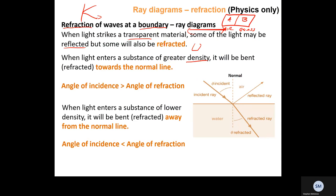Density is the idea of more particles in a particular amount of space. If block A and block B have the same volume but block A has a mass of one kilogram and block B has a mass of ten kilograms, block B has more or heavier particles in it — so we say block B is more dense. We'll talk about optical density shortly — that's about how hard it is for light to travel through a particular material.